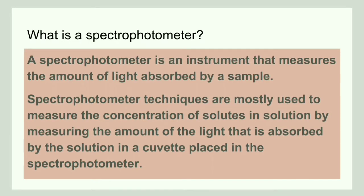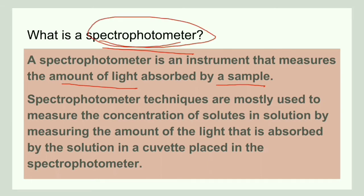What is a spectrophotometer? A spectrophotometer is an instrument that measures the amount of light that is being absorbed by a sample. By measuring the amount of light absorbed by a sample, we can understand the concentration of solutes in the solution. So, to understand the concentration of solutes, we measure the amount of light absorbed by the sample.